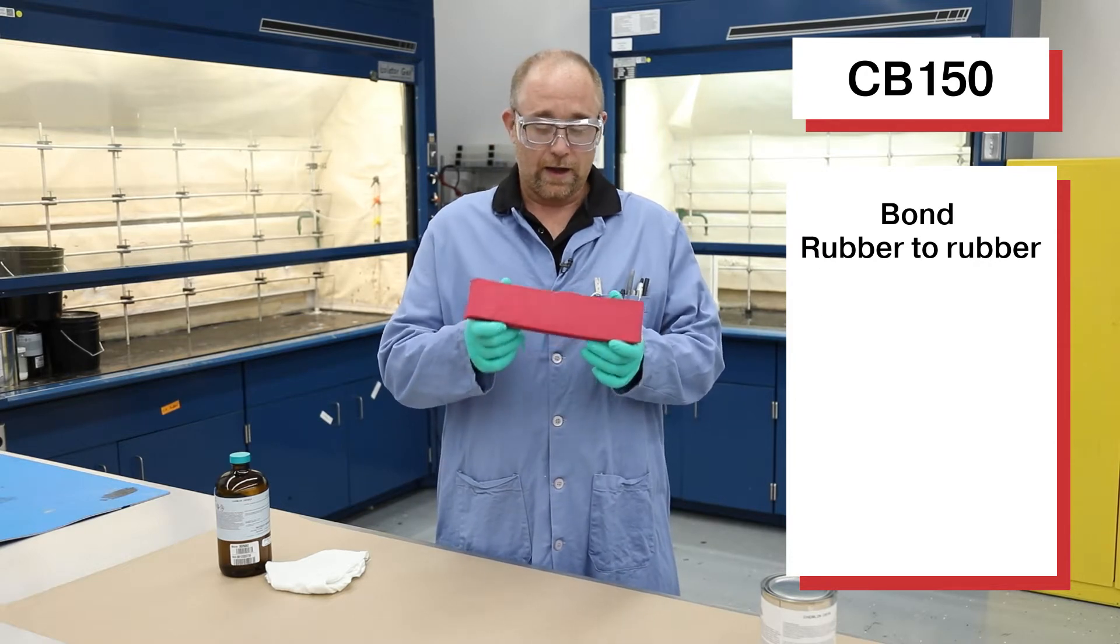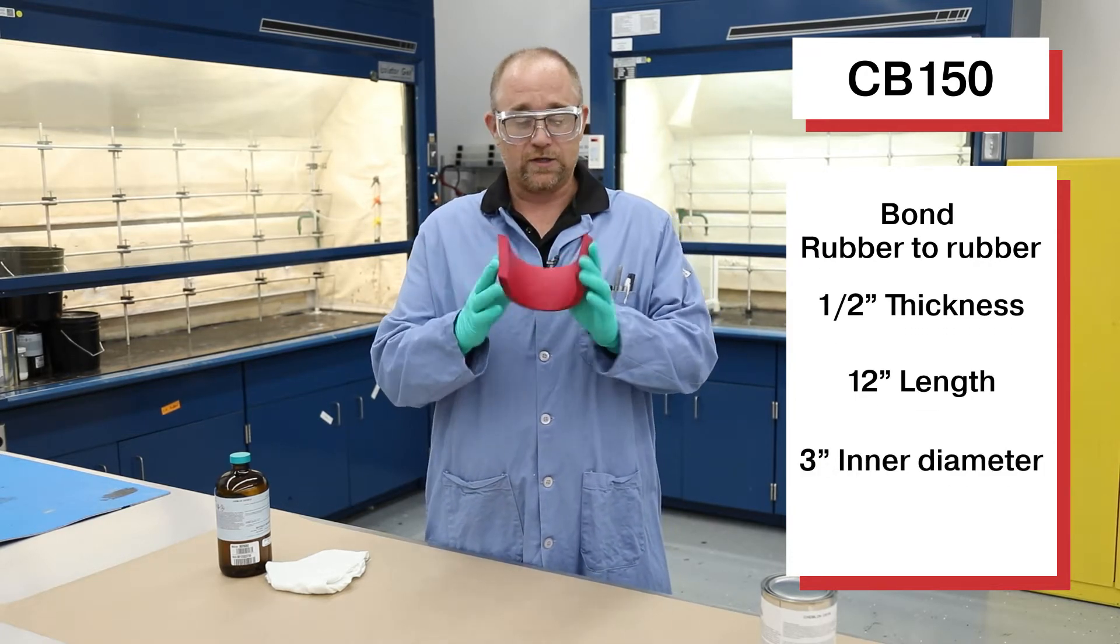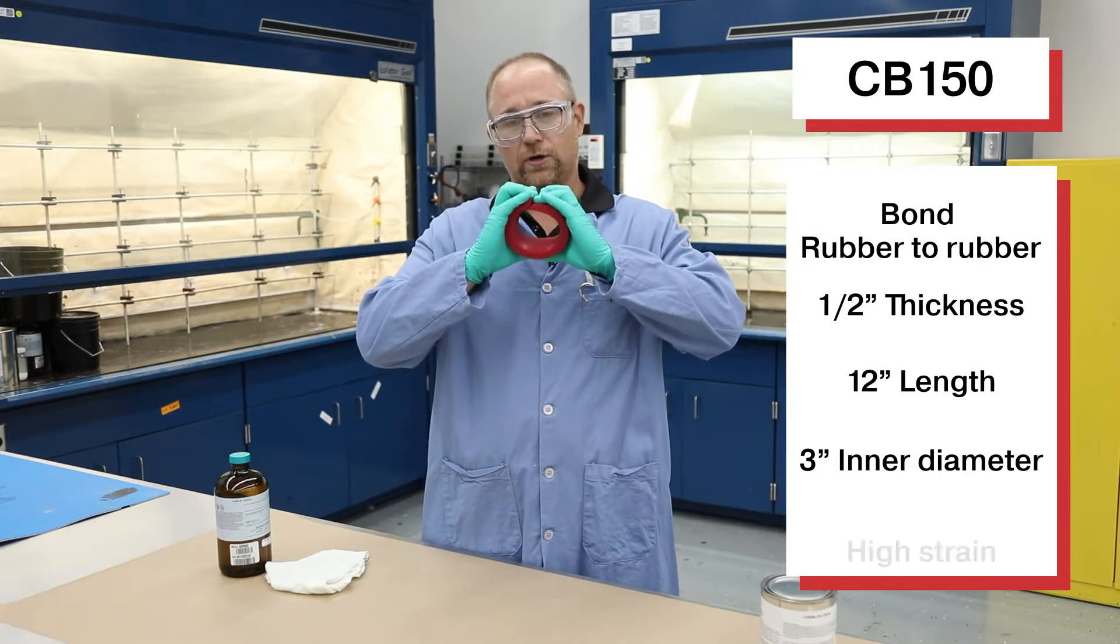We're going to be using half inch thickness, 12 inches long, and it's a three inch inner diameter circle with high strain.